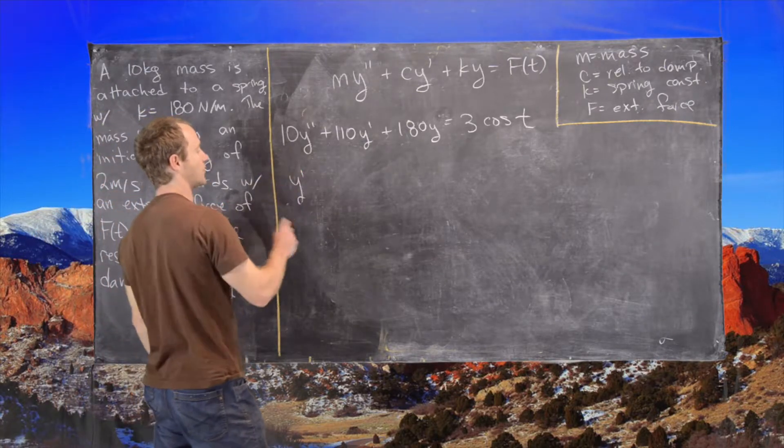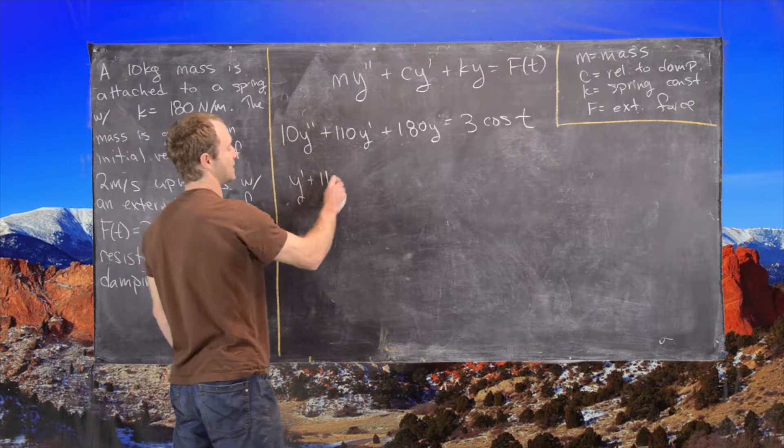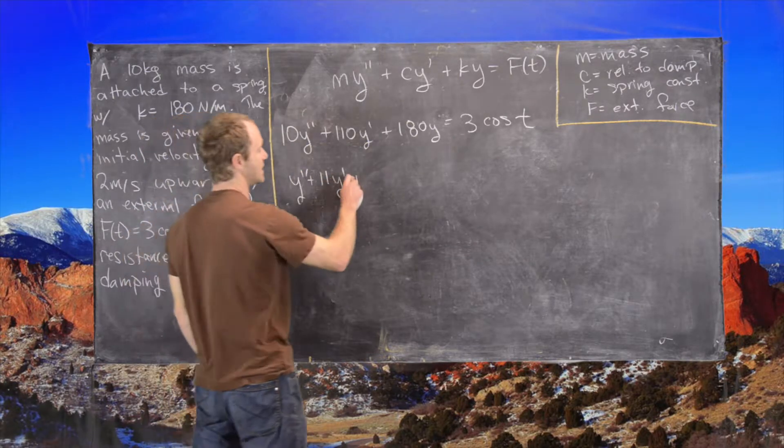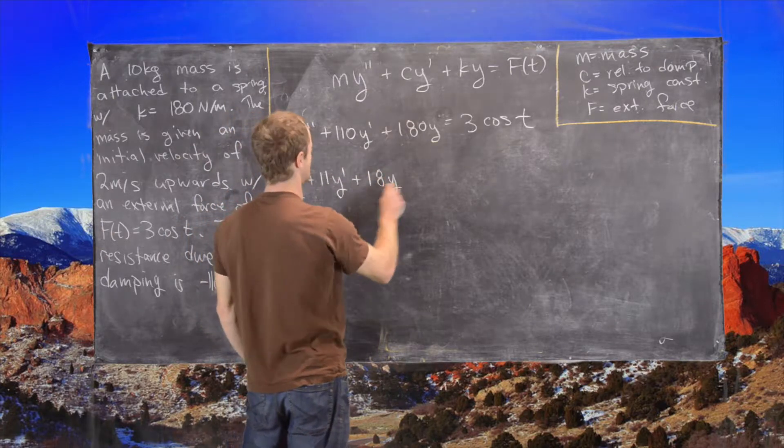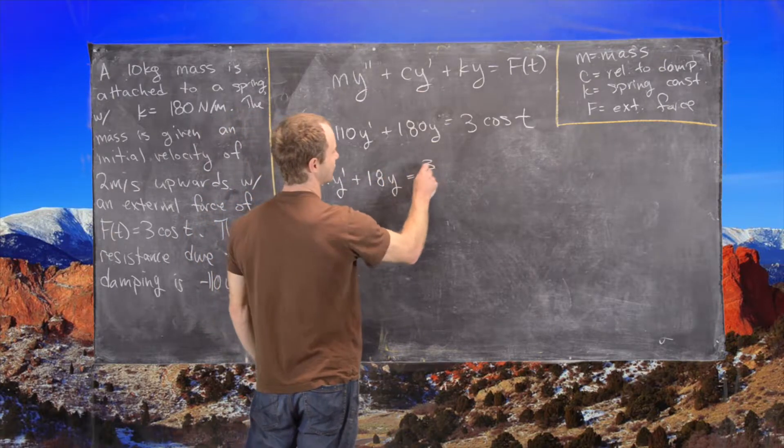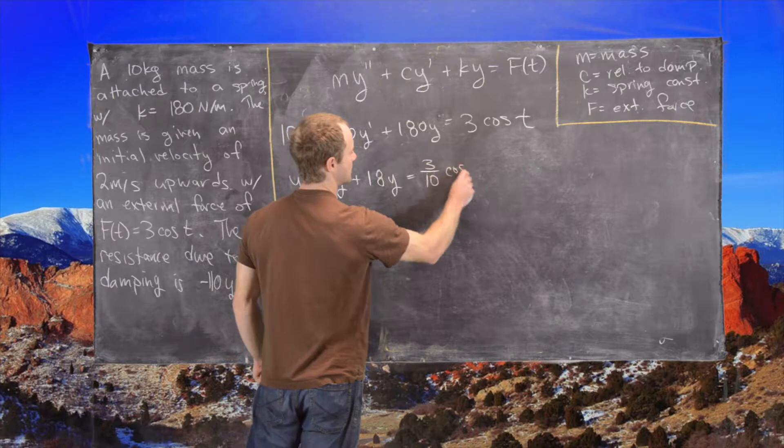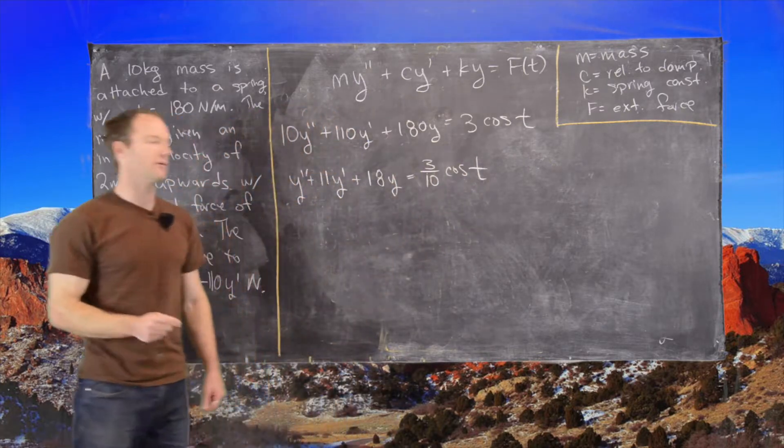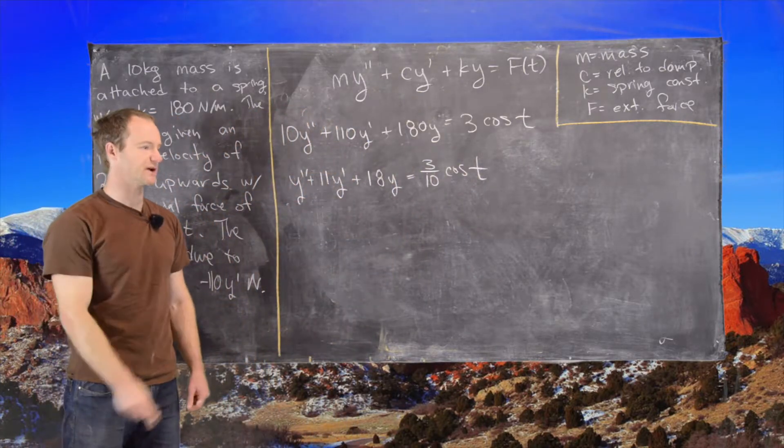And we get y double prime plus 11 y prime plus 18 y equals 3 over 10 cosine t. So now we want to solve this differential equation.